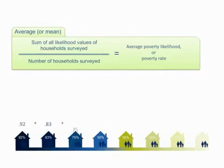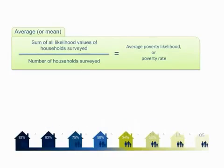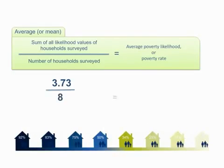So, to find the rate of poverty in a group of households that you've surveyed with the PPI, add all likelihood values together and divide that number by the number of households you surveyed. That number is the percent of households in that group that live below the poverty line.